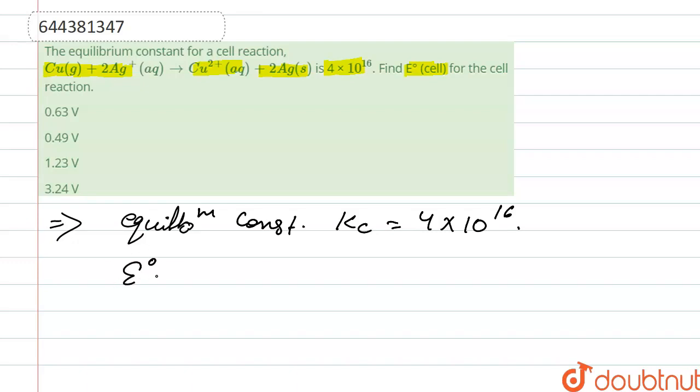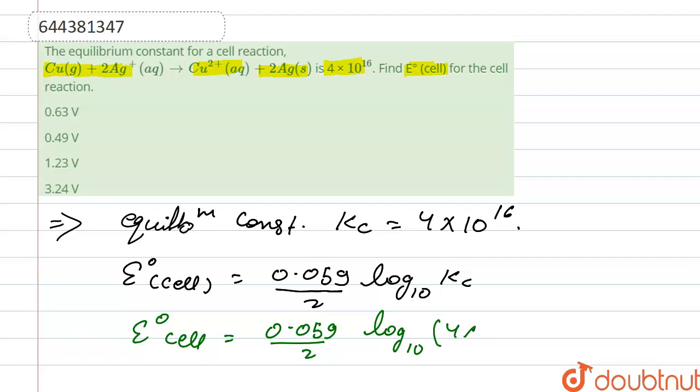E naught cell is equal to 0.059 upon 2 log 10 Kc, right. So here, E naught cell is equal to 0.059 upon 2 log 10 4 into 10 to the power 16.